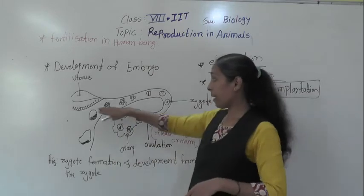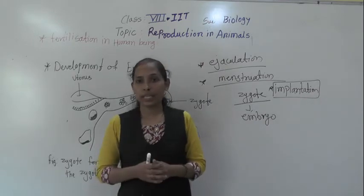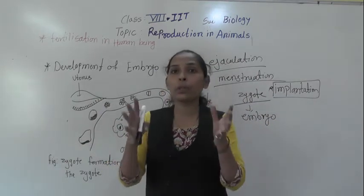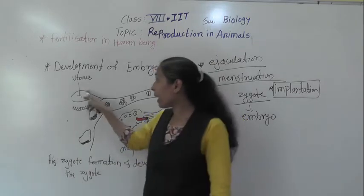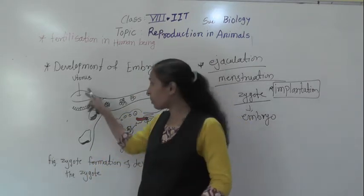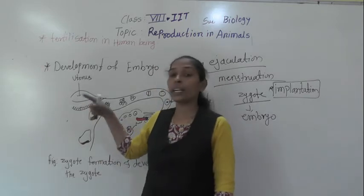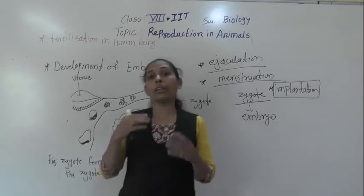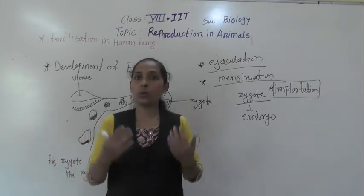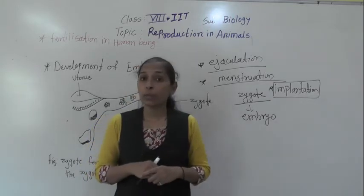Once the embryo is implanted into the uterus, it starts to develop there. It grows in the amniotic cavity — the space inside the uterus filled with fluid. The embryo starts to develop different body parts such as hands, legs, head, nose, and ears. All these body organs start to develop in the embryo.